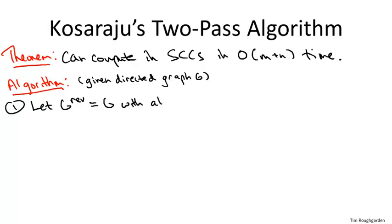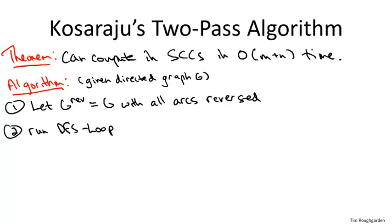Then we do our first pass — our first depth-first search — on the reverse graph. The naive way is to literally construct a new copy with all arcs reversed, then run DFS on it. The obvious optimization is to just run DFS on the original graph but going across arcs backward, which simulates DFS on the reverse graph. I've written DFS loop here, which means the usual trick: an outer loop over all vertices so you see all nodes even if the graph is disconnected, initiating DFS from each unvisited node.